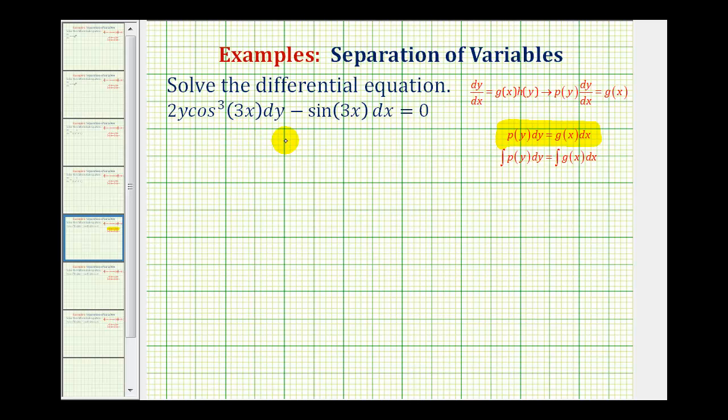So looking at the differential equation, let's go ahead and add sine 3x dx to both sides of the equation. That would give us 2y cosine cubed of 3x dy equals positive sine 3x dx.